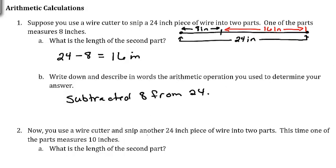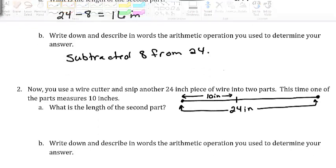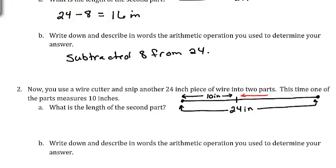Now use a wire cutter and snip another 24-inch piece of wire into two parts. This time one of the parts measures 10 inches. So we're starting out with our 24-inch piece of wire again, and this time we're going to remove from that a 10-inch piece. We want to figure out what the length of the second piece is.